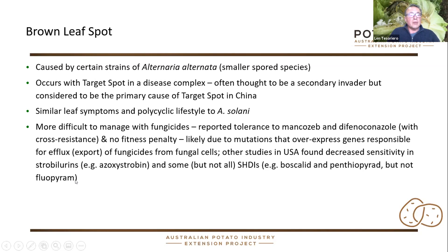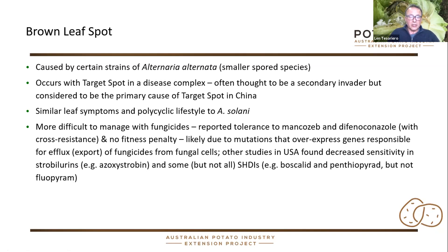Other studies in the US showed decreased sensitivity to the strobilurins — the Group 11s, like azoxystrobin — but not to all of the SDHIs, the Group 7s. For example, they found boscalid became less efficacious in controlling it, but not fluxapyroxad. So there are differences within the Group 7s in how they work. There was also work showing that pyroclostrobin in the strobilurins was less affected, at least in that particular study, though other studies since have shown that all the strobilurins have lost some sensitivity.